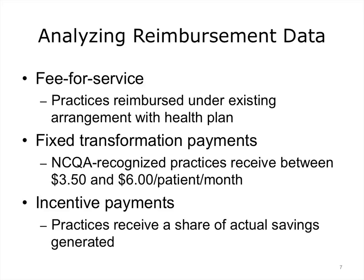When analyzing reimbursement data, health care payment data may be a mixture of fee-for-service, where primary care practices continue to be reimbursed under their existing fee-for-service payment arrangements with health plans; fixed transformation payments, where primary care practices with NCQA recognition receive a per-patient per-month fee paid semi-annually between $3.50 and $6.00, part of which is invested into care coordination; and incentive payments, where primary care practices that have reported on a set of clinical quality and utilization measures receive a share of actual savings generated by reducing total cost of care through improved patient outcomes. This is the shared savings.